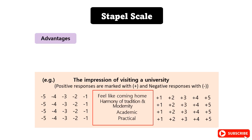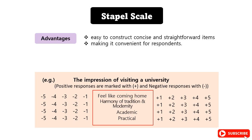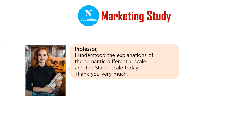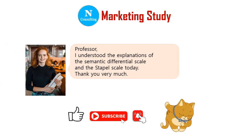Compared to the Semantic Differential Scale, the Staple Scale has the advantage of being easy to construct concise and straightforward items, making it convenient for respondents. However, a potential drawback is that it may be somewhat intuitive and could lead to confusion. I understood the explanations of the Semantic Differential Scale and the Staple Scale today. Thank you very much!